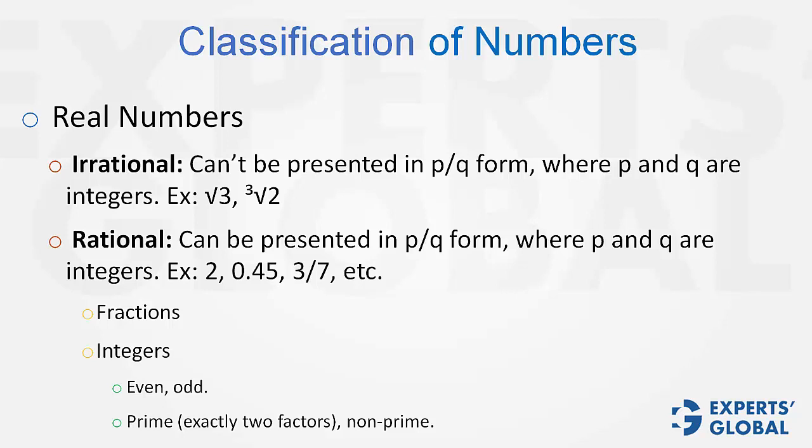A couple of other exceptions are that 0 is an even integer. Many students think that it is neither even nor odd, but 0 is very much an even integer. It is neither negative nor positive but it is even, and 2 is the only even number that is prime. Please be aware of these exceptions as well.